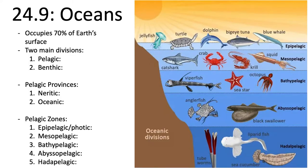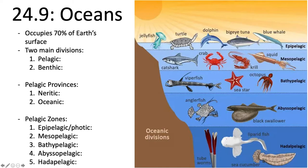Oceans occupy 70% of the Earth's surface. There are two main divisions: pelagic — the whole body of water — and benthic — the bottom layer. Within pelagic environments you can have the neritic province, which is water overlying the continental shelf, and the oceanic province, which is water that does not overlie the continental shelf.